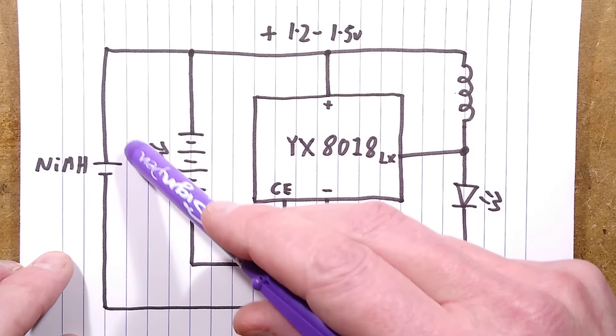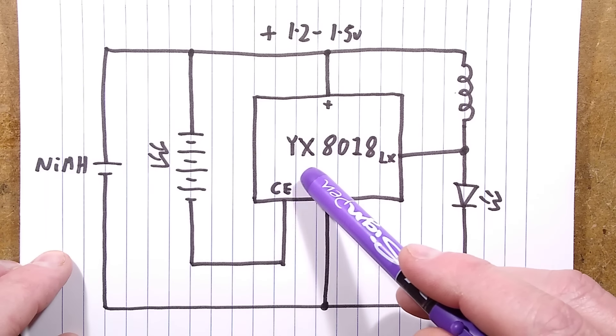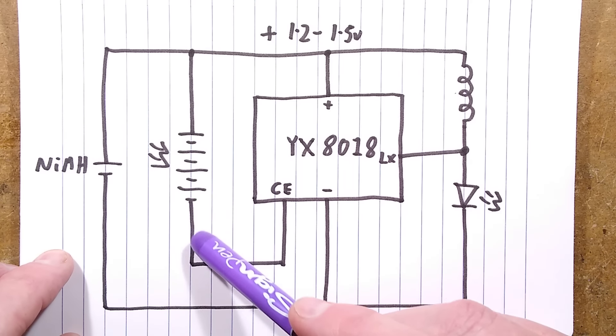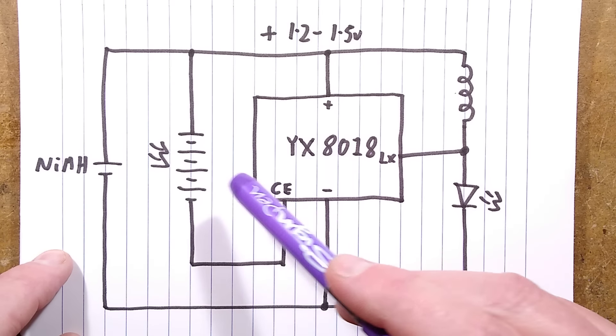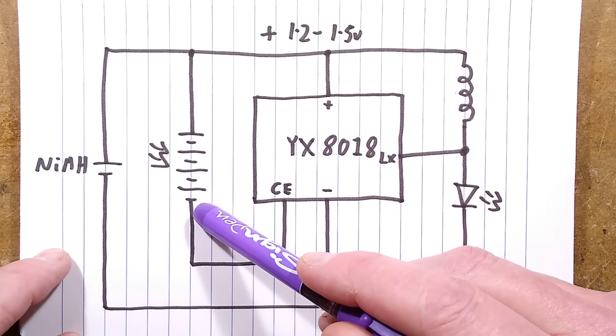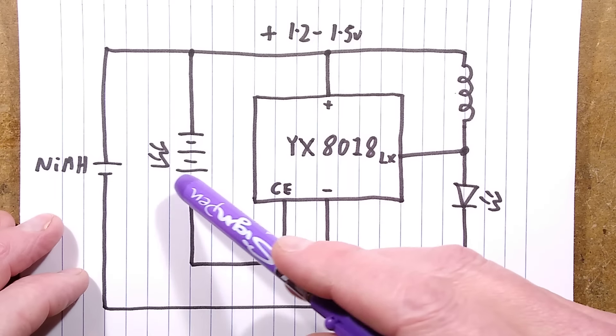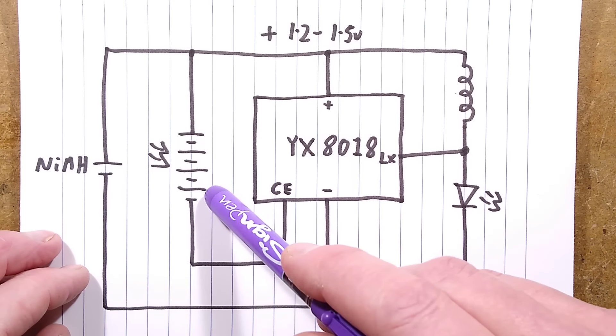And that charges this nickel metal hydride cell via a diode in here going to the negative, but it also uses that input to actually monitor the voltage across this and determine when it's dusk by detecting the lack of output from the solar panel.